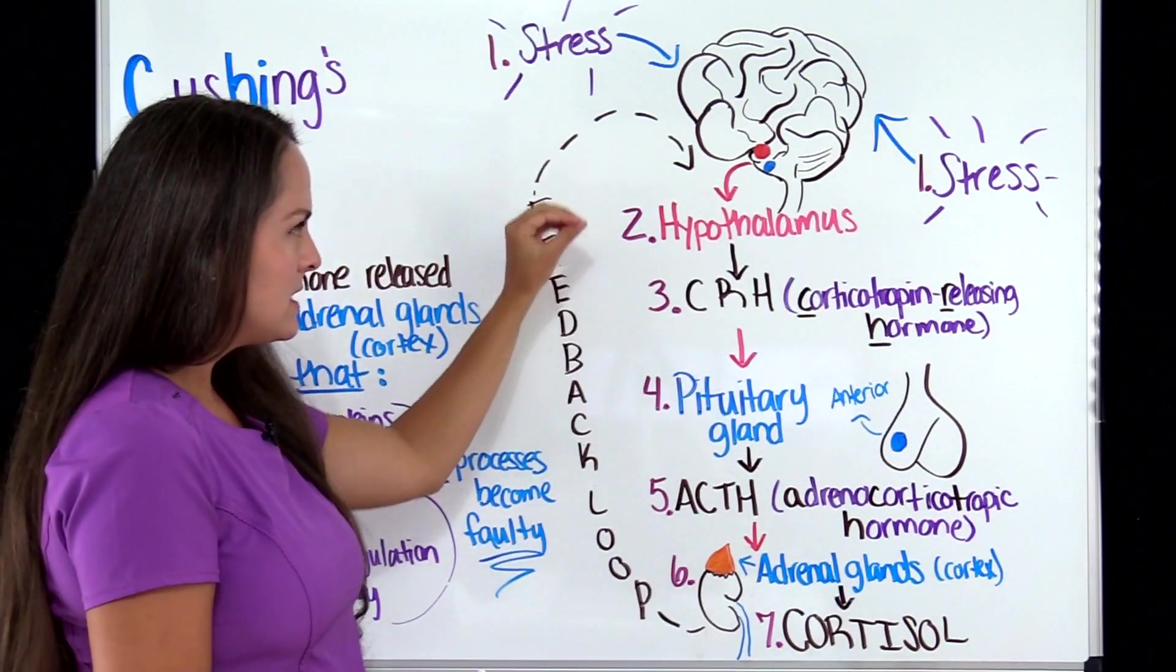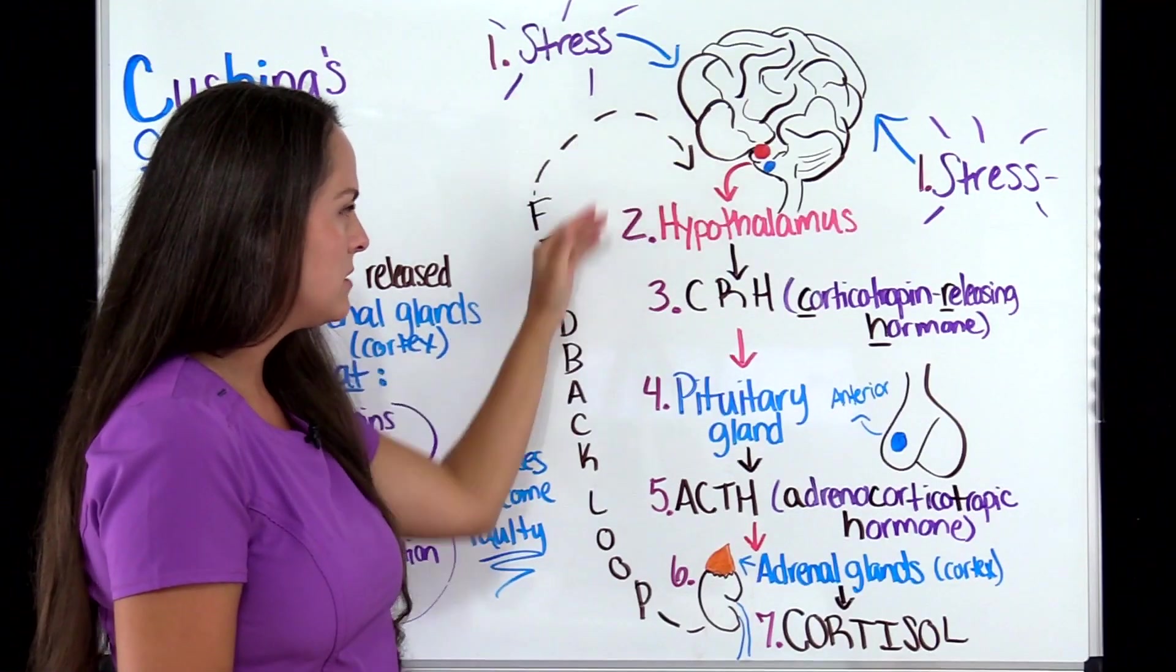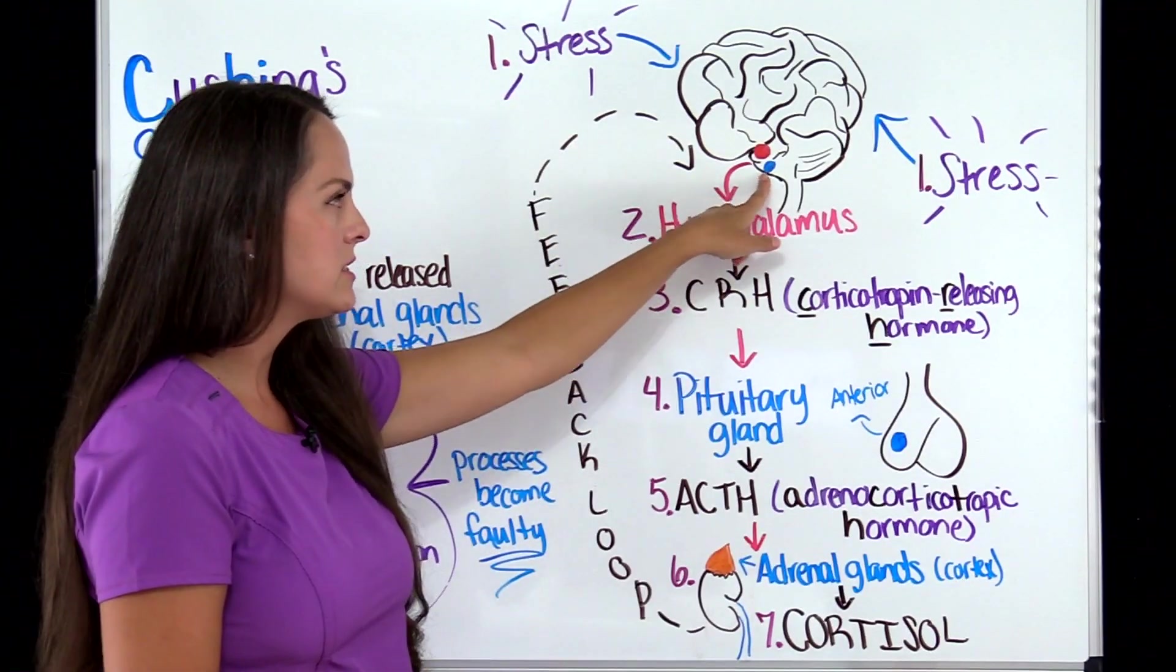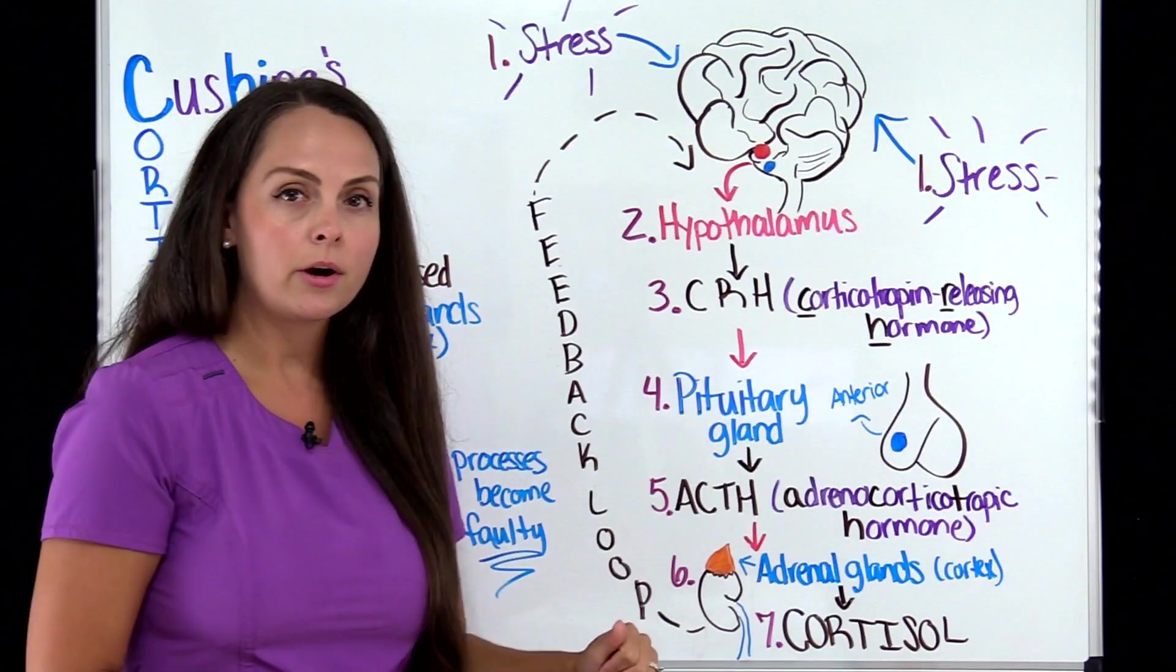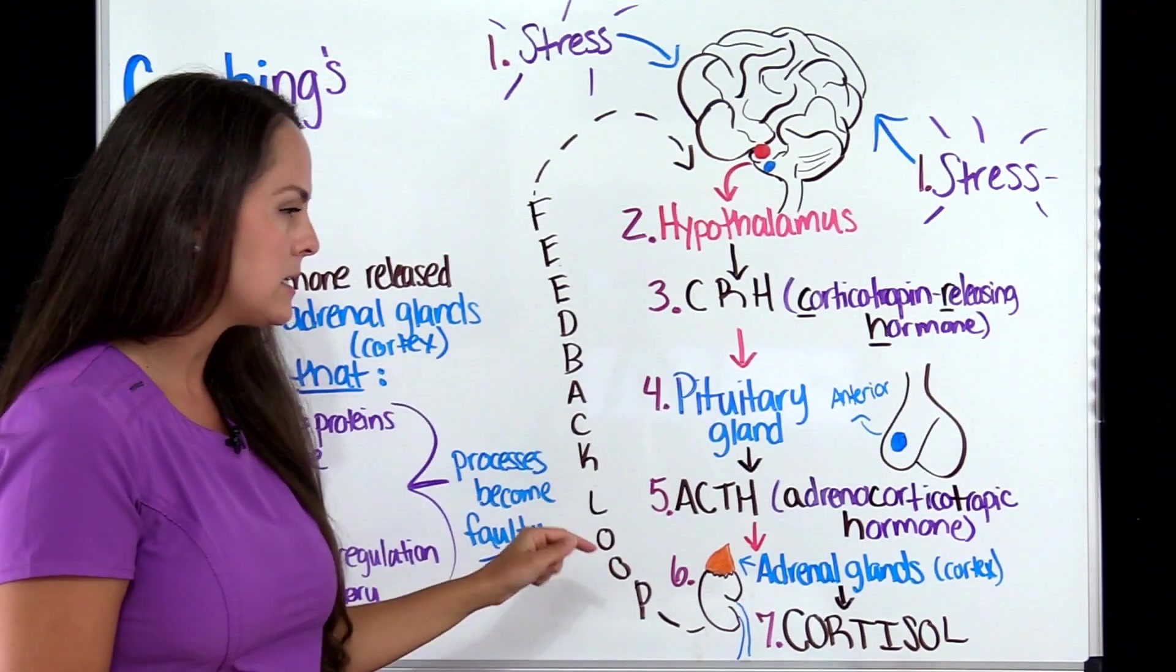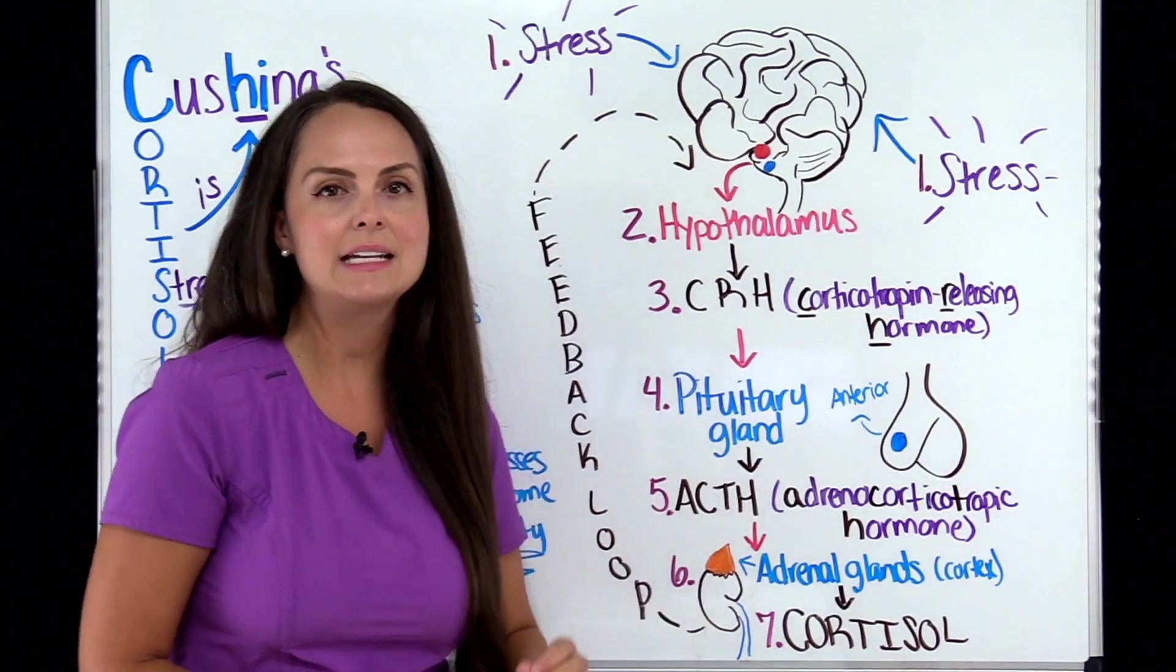So whenever this substance is in the body, it's going to stimulate another structure, which is just a little bit below the hypothalamus, the pituitary gland, particularly the anterior part of the pituitary gland to release its own substance known as ACTH.